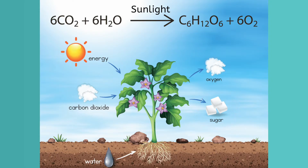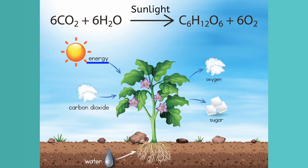If you count up all the carbons, hydrogens, and oxygens on each side, they match — plants can't create glucose out of nothing. The word photosynthesis comes from the words photo, meaning light, and synthesis, which means put together. Plants and other photosynthesizing organisms use chemical reactions to put together glucose, or sugar, using water, carbon dioxide, and energy from sunlight, while producing oxygen as a waste product.